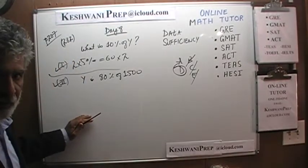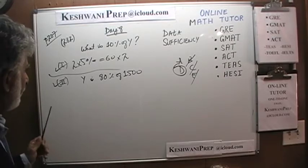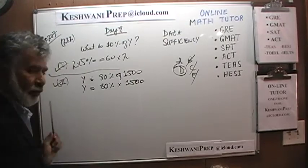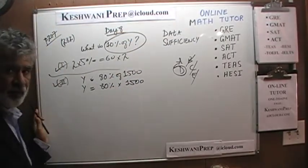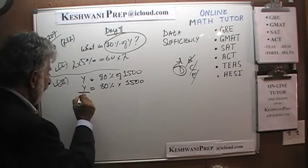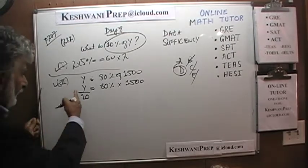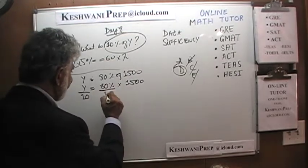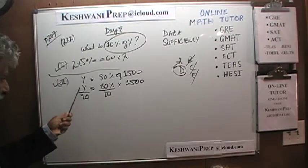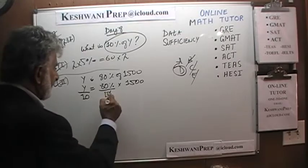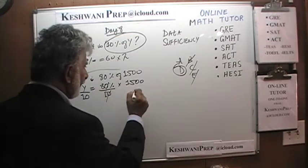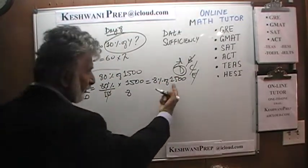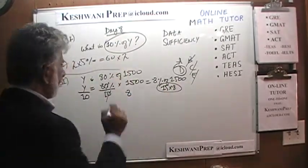The part we are about to do is only for learning purposes — it's not something you will do in a real exam. Y is 80% of 1500, and what we want to find is 10% of Y, which is the same as 1/10 of Y. If we divide both sides by 10, we get 8% of 1500. 1% of 1500 is 15, times 8 is 120, which is exactly what we found.